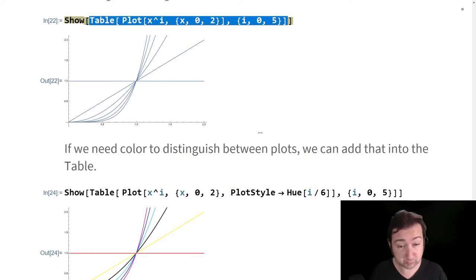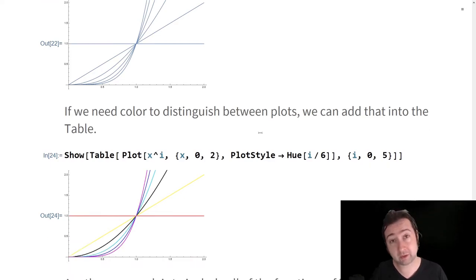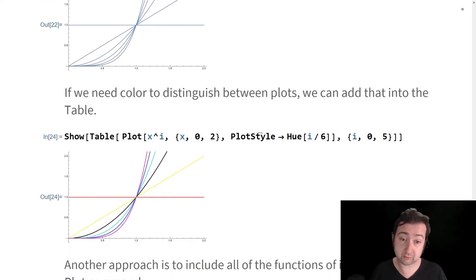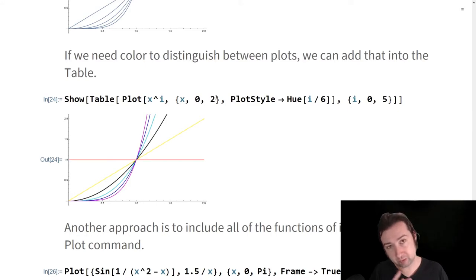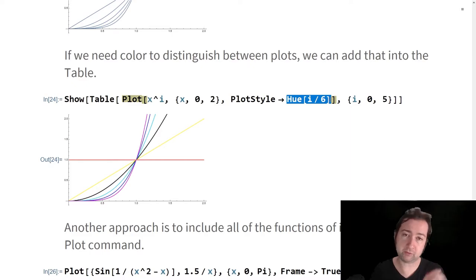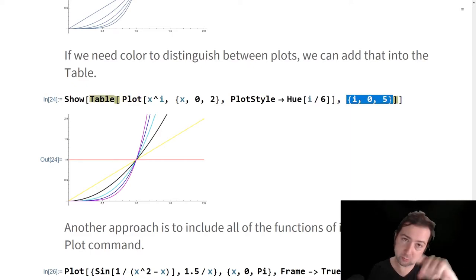You might want to put color in here to distinguish between the plots. This is a trick I've used in several of the demos that I've done for the class already. If you construct plots in a table, you can set a color and then have that color vary with the index of the table. As the index increases, the numerator of the hue increases as well. And that's going to shift the colors as you go down.